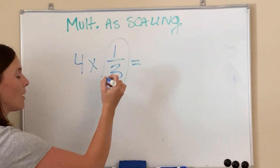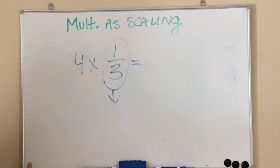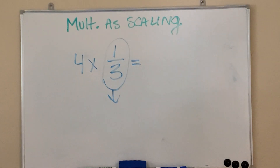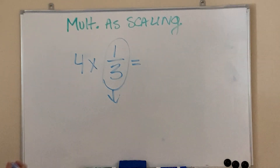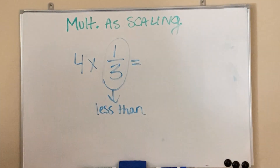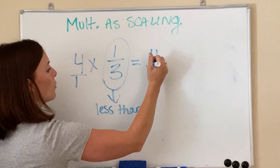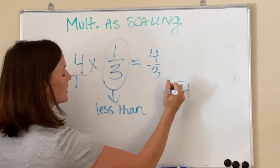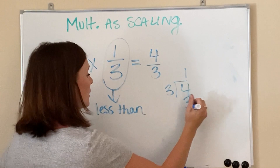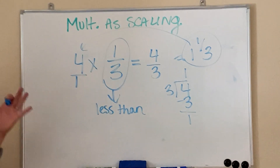It all depends on what you're multiplying by. Is one third smaller than one or bigger than one? It's smaller. So the rule says that if you multiply anything times a number that is smaller than one, you're always going to have a smaller answer. Let's prove that's true: if I multiply across, I get four over three. Since it's improper, I divide and get one and one third. One and one third is way smaller than four — so it is true.